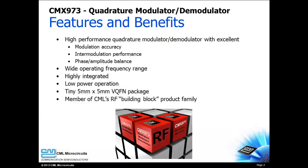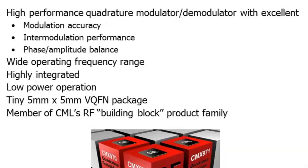The CMX973 is a single-chip quadrature modulator and demodulator that provides high performance to your design. A wide frequency range, high level of integration, and low power consumption are provided by the CMX973, which is offered in a tiny 5x5 millimeter package.